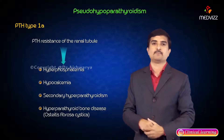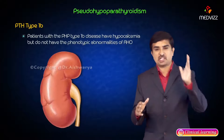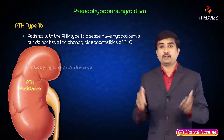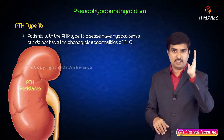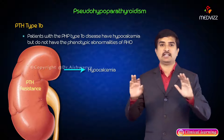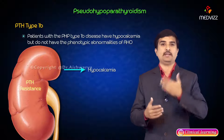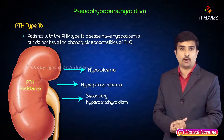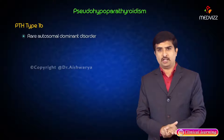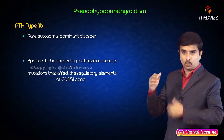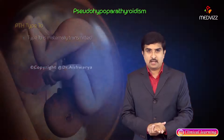PHP type 1b patients have hypocalcemia but do not have the phenotypic abnormalities of Albright Hereditary Osteodystrophy. PTH resistance appears to be confined to the kidney only, leading to hypocalcemia and hyperphosphatemia but not other clinical manifestations. Secondary hyperparathyroidism is present due to feedback regulation. This rare autosomal dominant disorder is caused by methylation defects or mutations affecting the regulatory elements of the GNAS1 gene rather than mutations in GNAS1 itself, and is maternally transmitted.